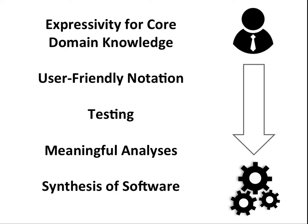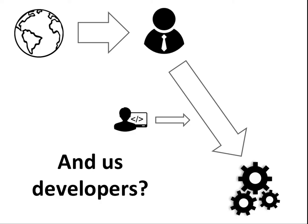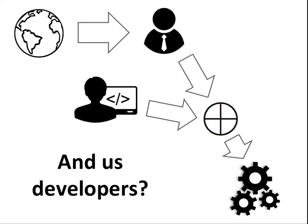A much better situation would be one where the business analyst — the person who understands the domain — can directly put their knowledge into the software system. We still need the step from the world to the analyst; we can't automatically do that easily. But we want this to be done directly by the person who understands the business. That business analyst needs a tool with which they can express domain knowledge, and it needs a user-friendly notation so they're not scared away by programming things. They need to test what they wrote, run meaningful analyses on consistency, and synthesize the software system. Developers in this story are the people who build that arrow — they build systems which domain experts use, and it's important there's a direct link from the domain expert into the software system.